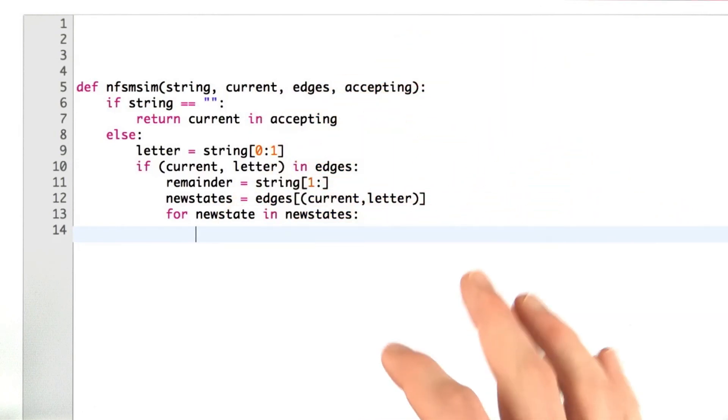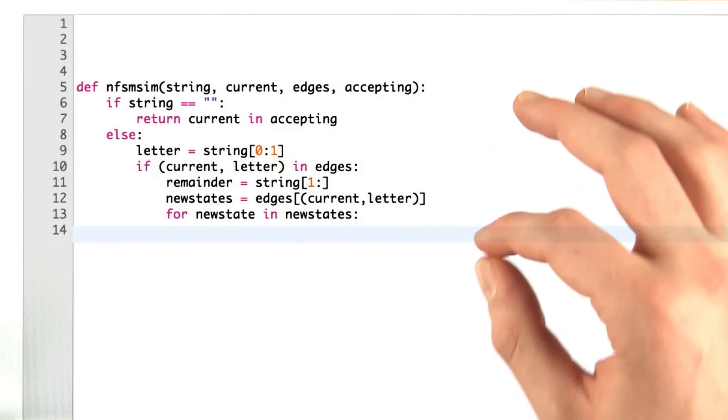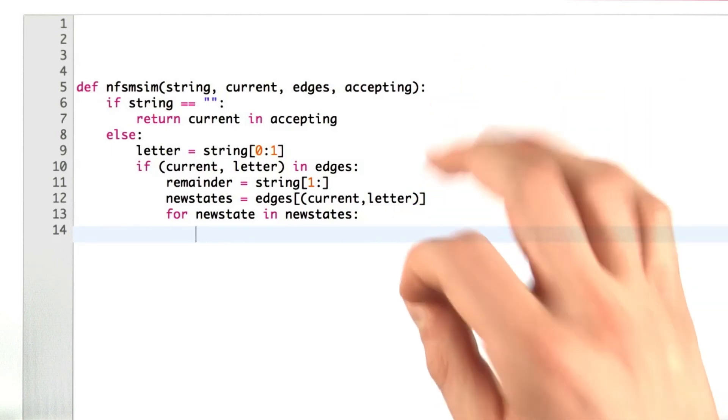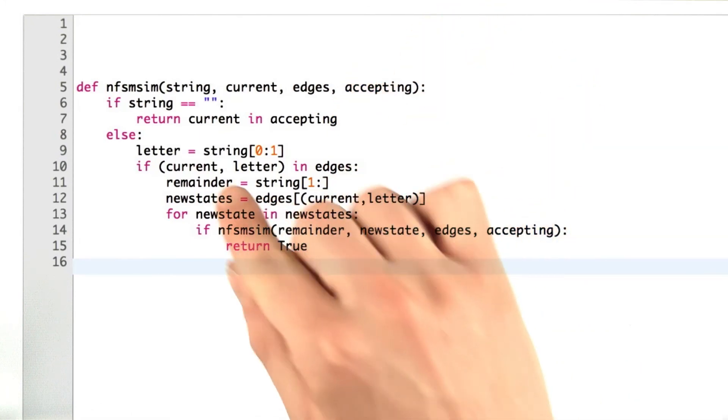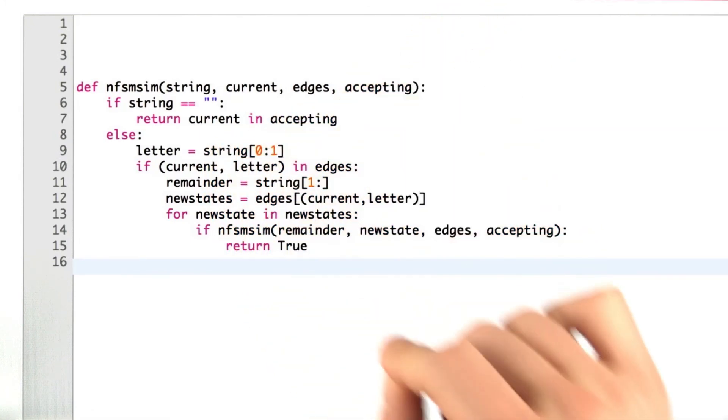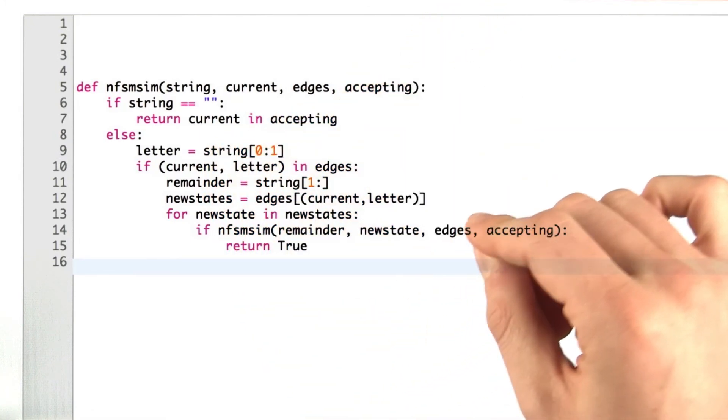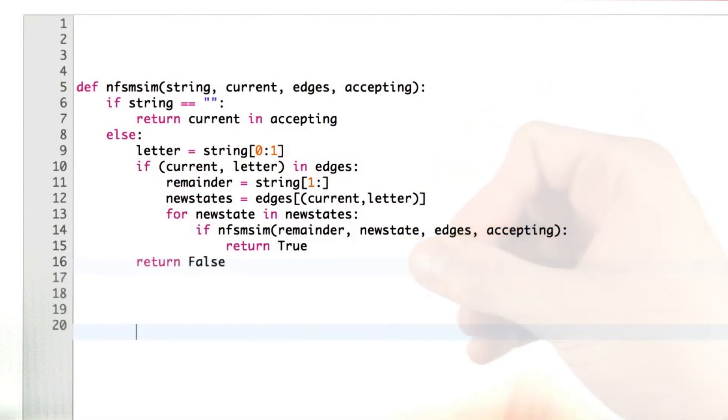And as I said earlier, we're going to return true if any of the recursive calls that we make return true. If we go through all this or if there wasn't an edge for the current letter at our present state, we're going to return false. And that's the code.